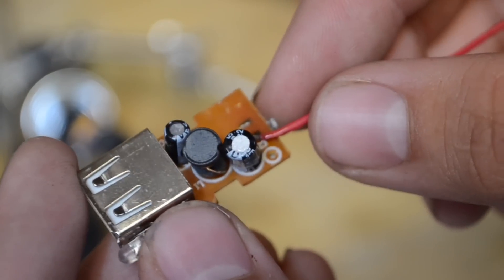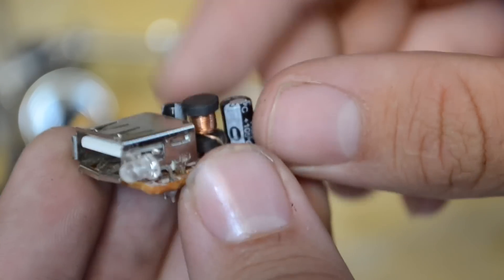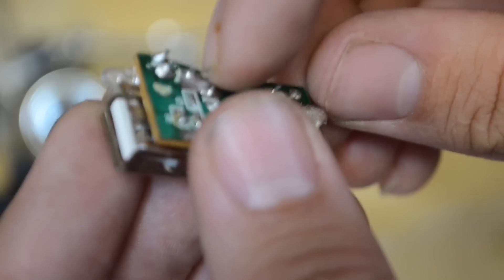So now that I have that red wire soldered onto there, I'm going to go ahead and solder a negative wire which will be brown in my case to the case of the USB drive.